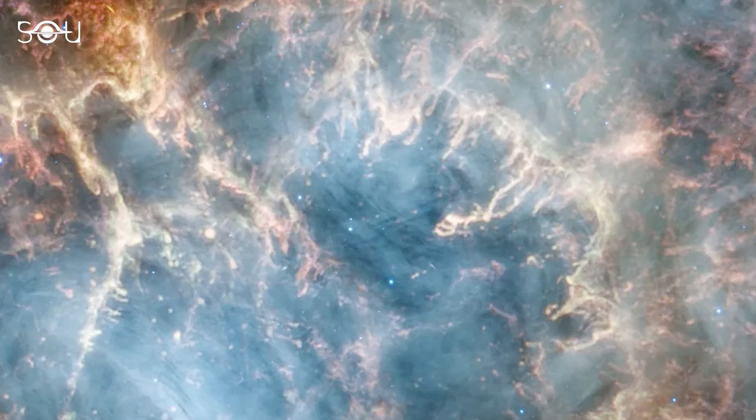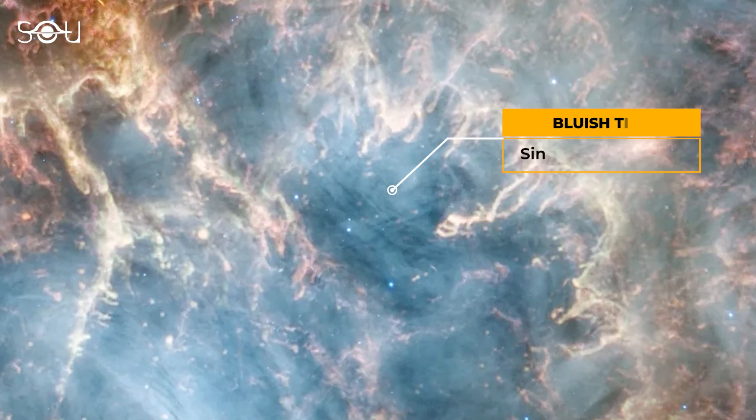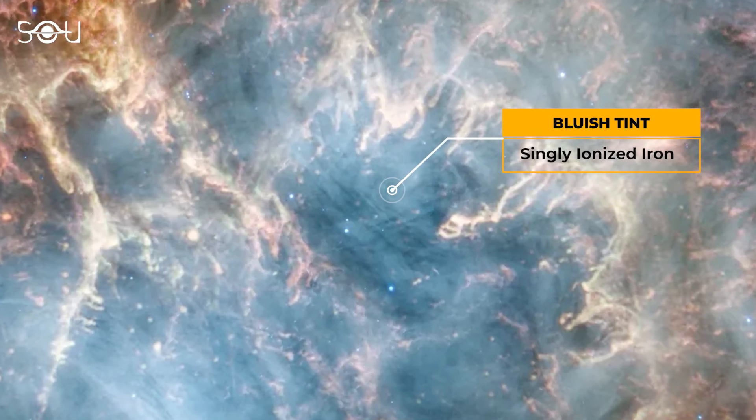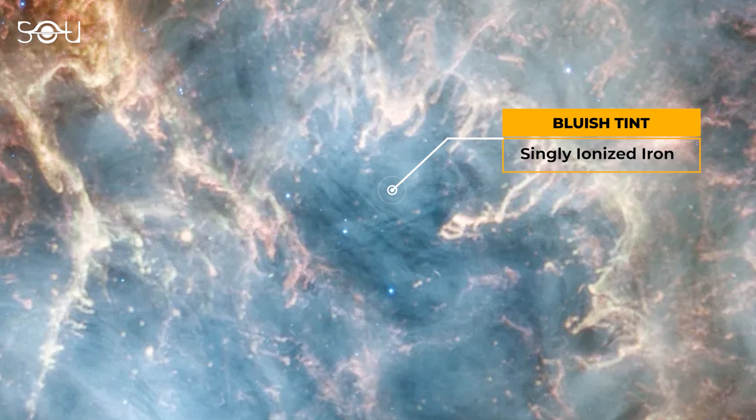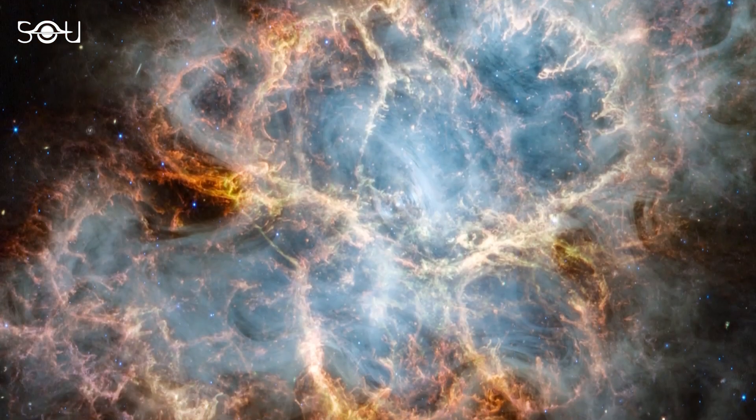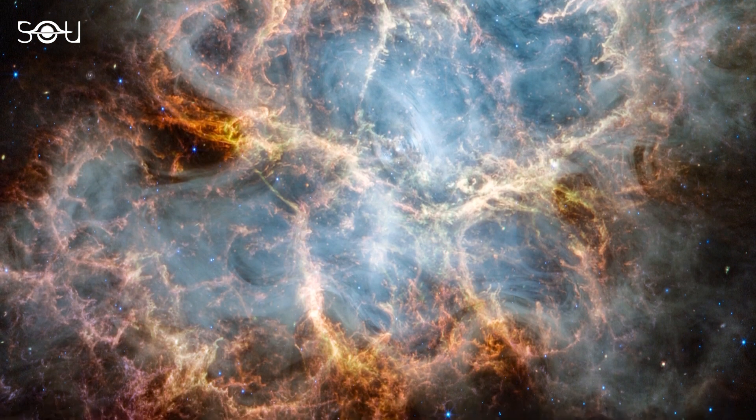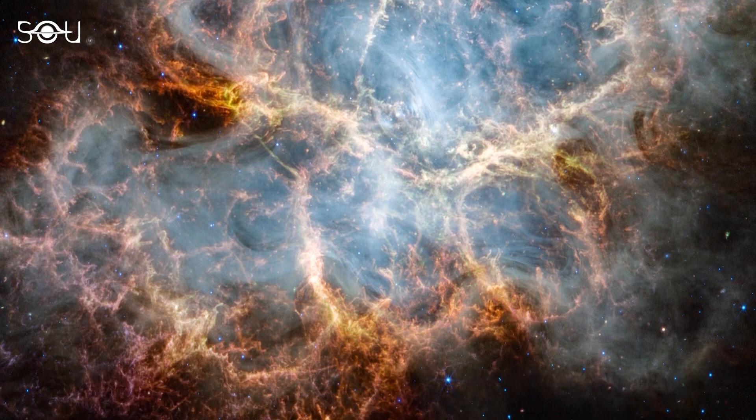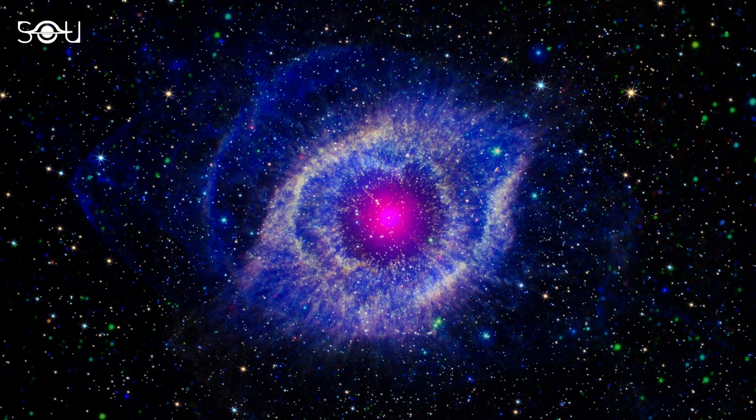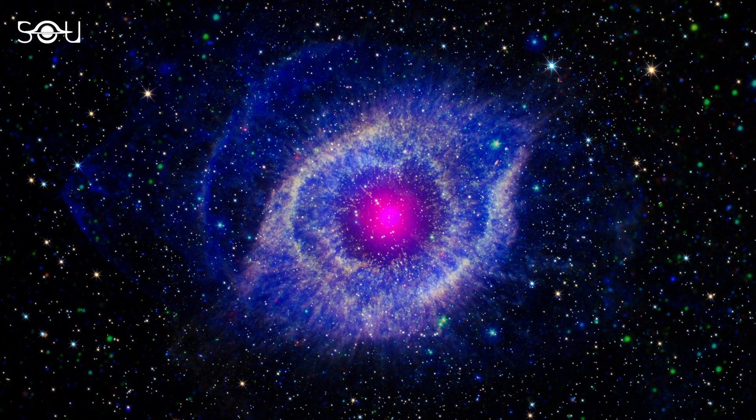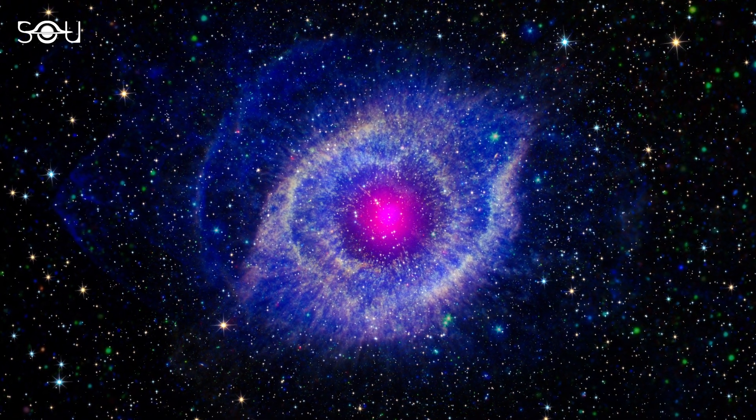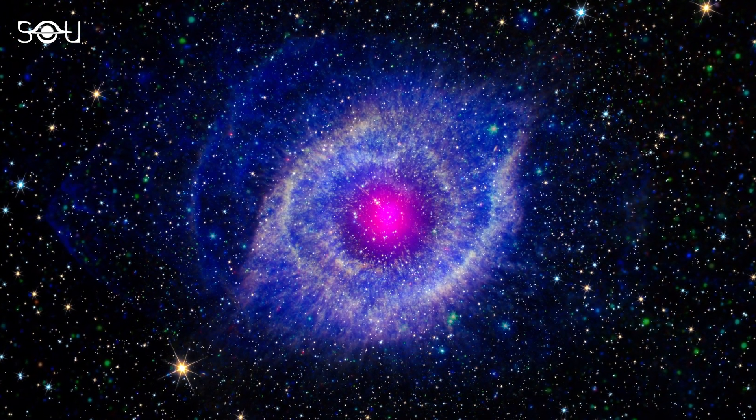Additionally, certain gas filaments within the image exhibit a bluish tint which may suggest the presence of singly ionized iron. This complex palette of colors and structures in the image not only adds to the visual splendor of the Crab Nebula, but also provides critical insights into the complex interplay of forces at work following a supernova explosion.